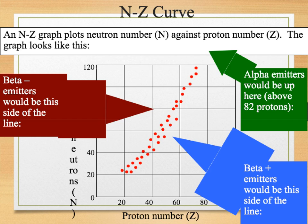It's important to note that NZ curves do not go above 82 protons. Any isotope of an element with more than 82 protons will be unstable and will go through alpha decay. We will now look at the NZ curve showing the decay of uranium.